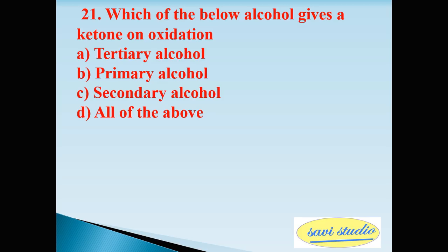Twenty-first question: which of the below alcohol gives a ketone on oxidation? A: tertiary alcohol, B: primary alcohol, C: secondary alcohol, D: all of the above. The right answer is, sorry, C: secondary alcohol.